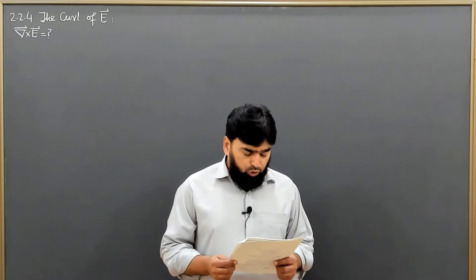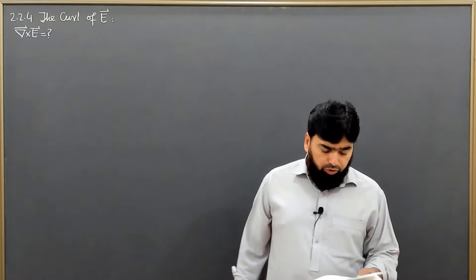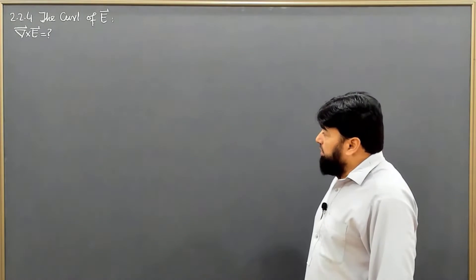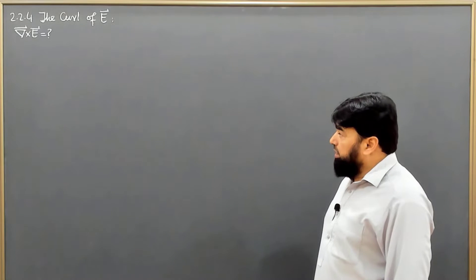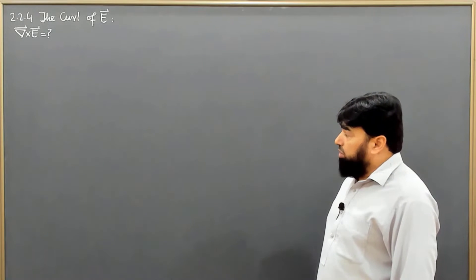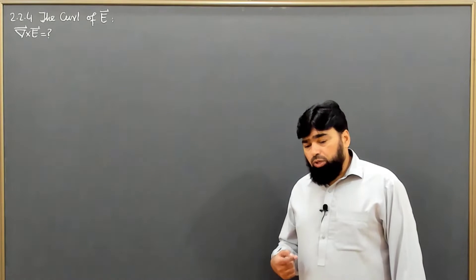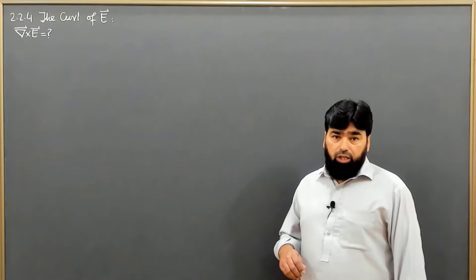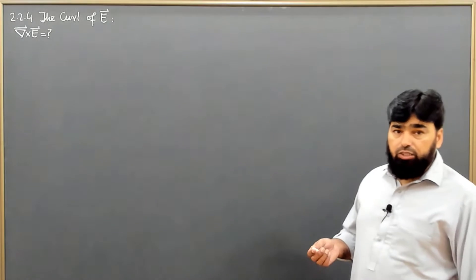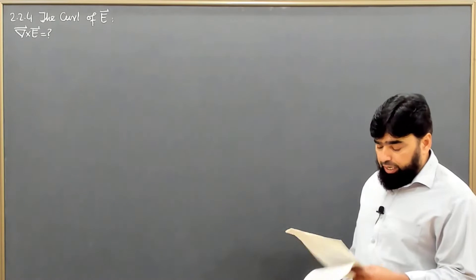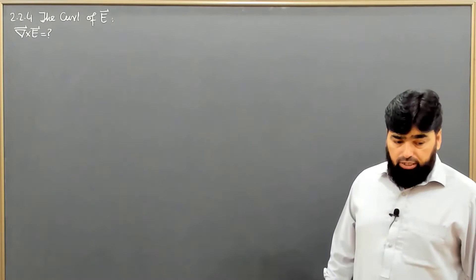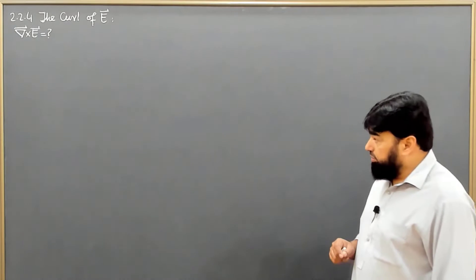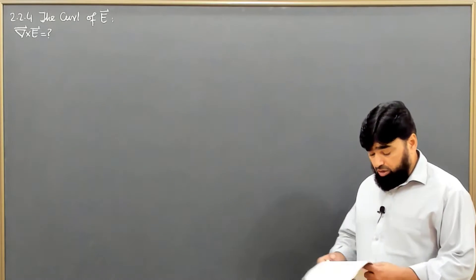In section 2.24, we will discuss the curl of E — what will be the curl or the twisting of E. Keep in mind that we are in electrostatics, and as we have already discussed, for electrostatics the electric field lines are never curling. The electric field lines from a point charge are always diverging from it and they are not curling.